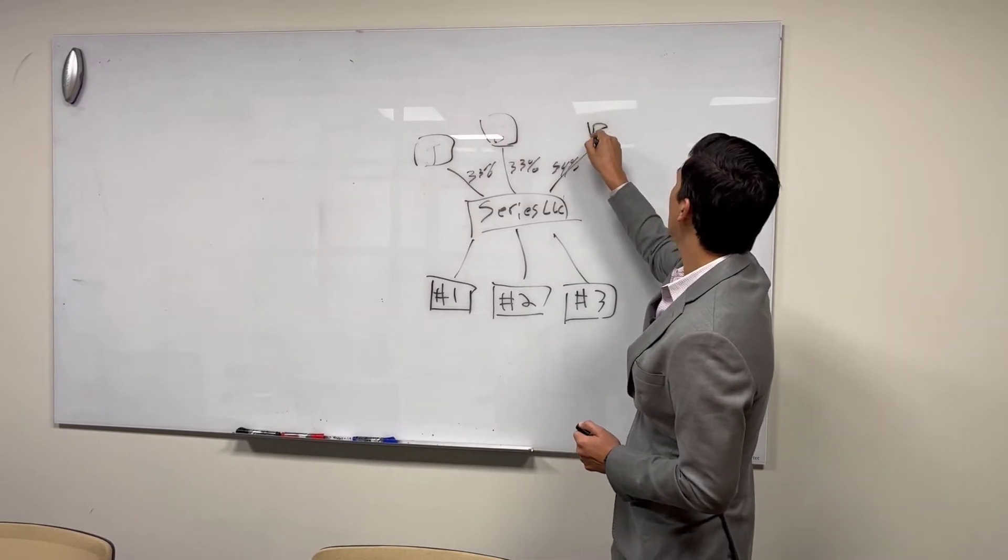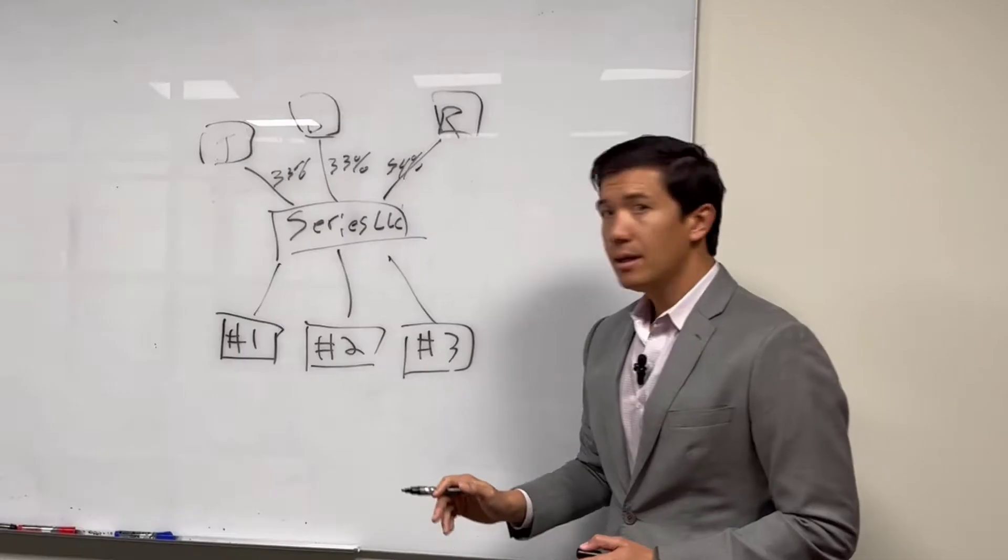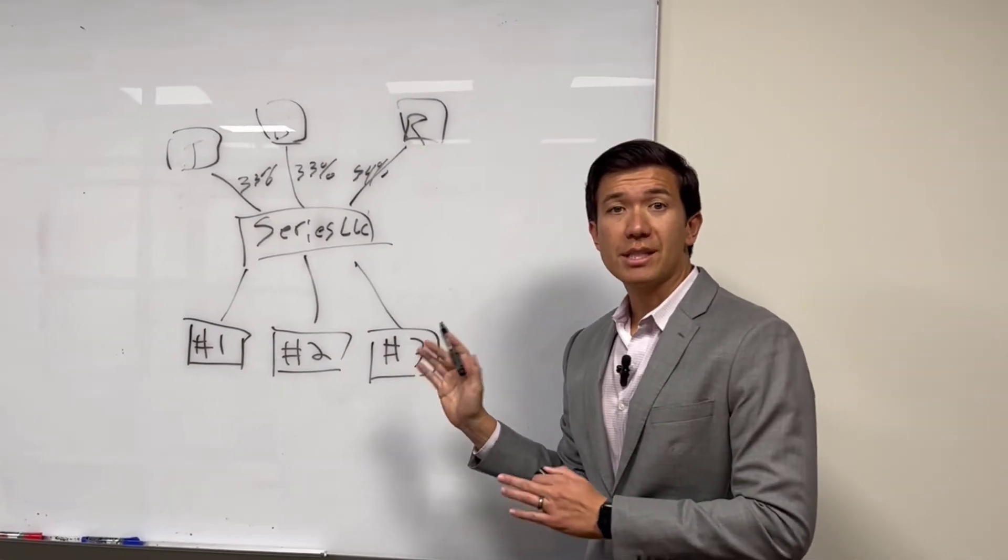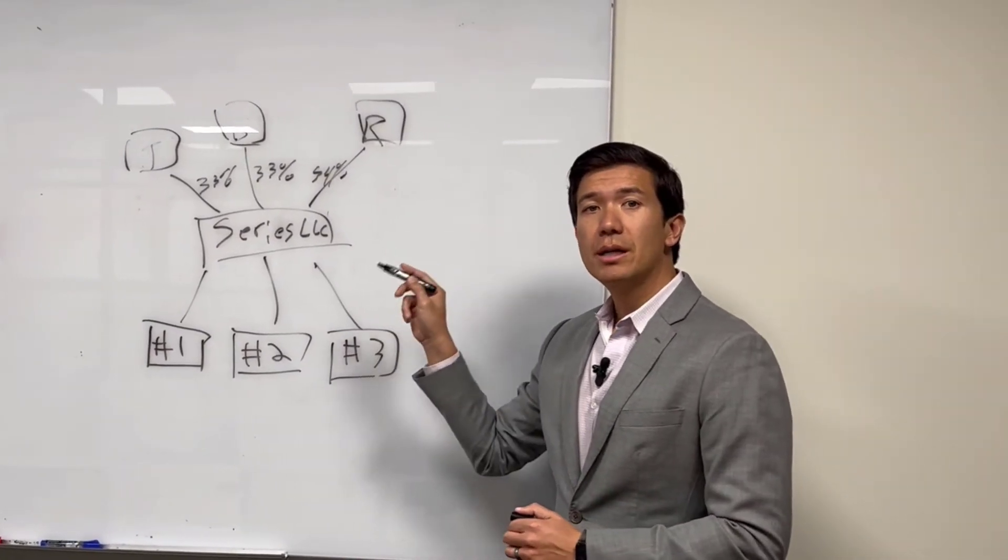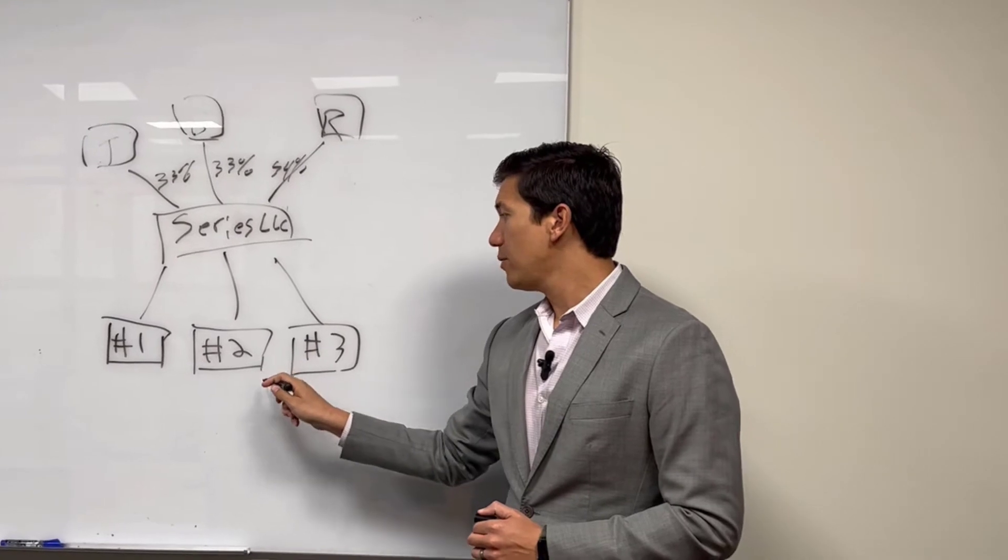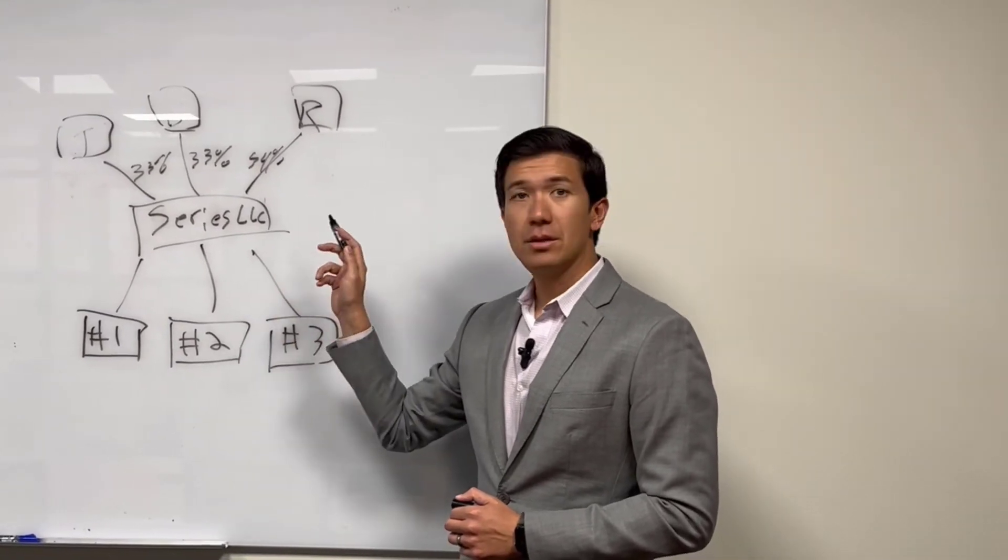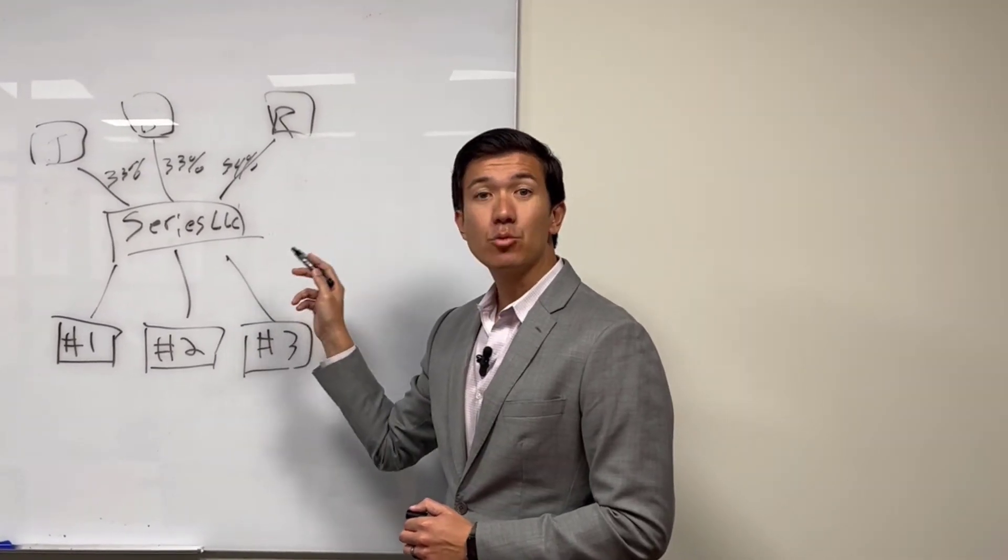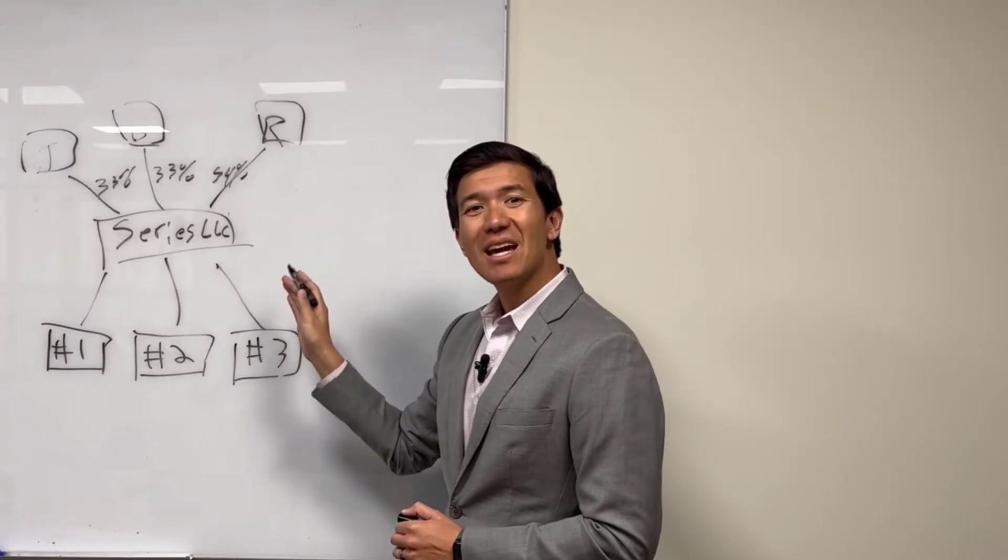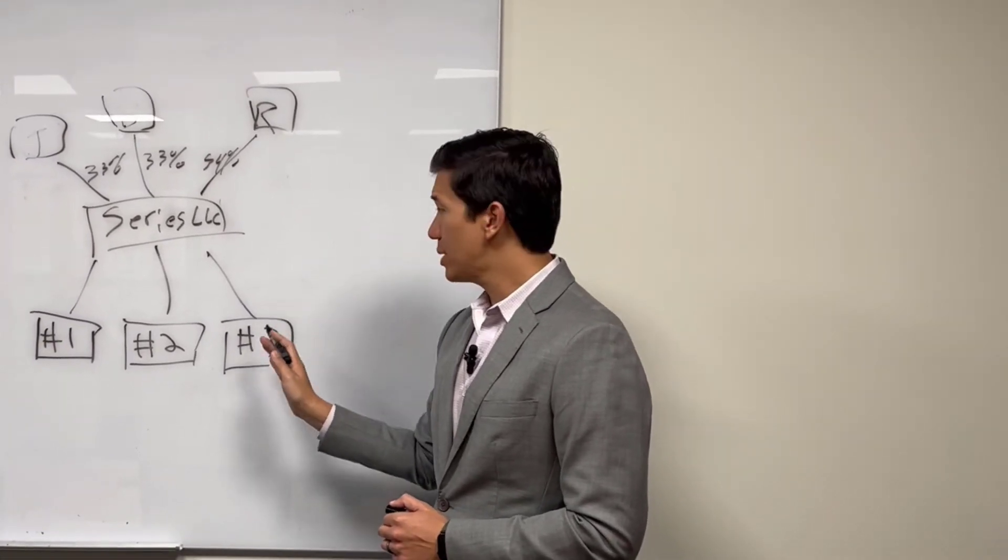We have J, B, and R as individuals. This is a great structure for scaling because it reduces your incremental filing fees and costs. You have minimal tax filing reporting requirements, but you get that individual series LLC protection.